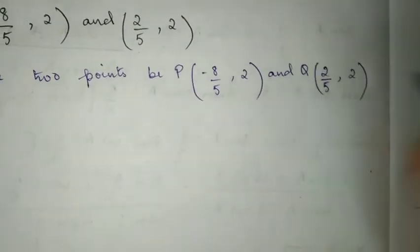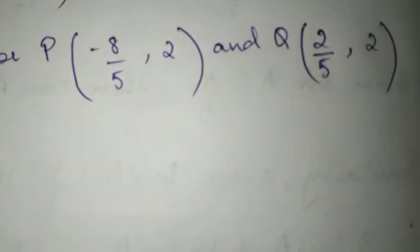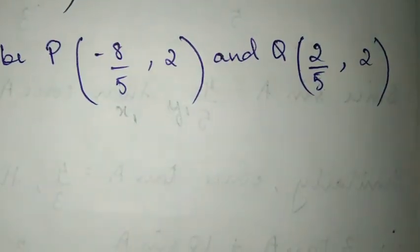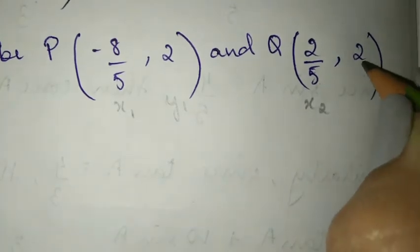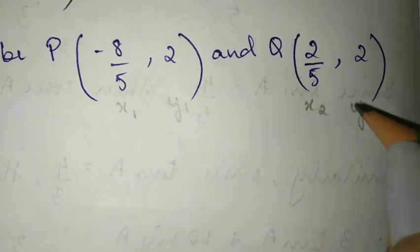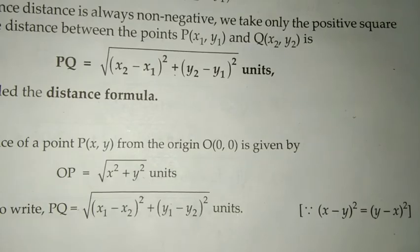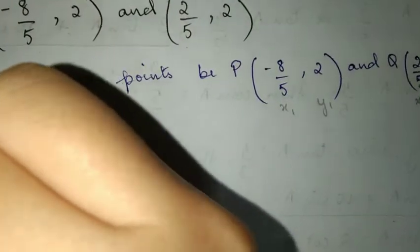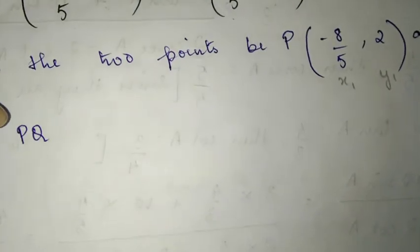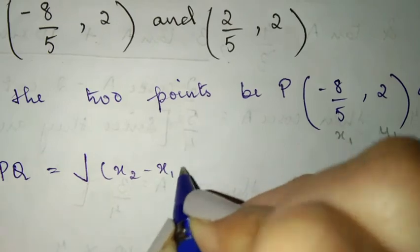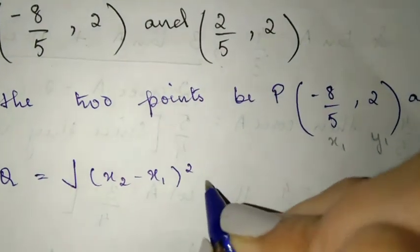Alright, these are the abscissa and ordinates. Now, point P's abscissa will be x1 and the first ordinate will be y1, and for Q we have x2 and y2. After this, we have the formula which says PQ is equal to root over: x2 minus x1 whole square plus y2 minus y1 whole square. So I want you all to write down the formula first.